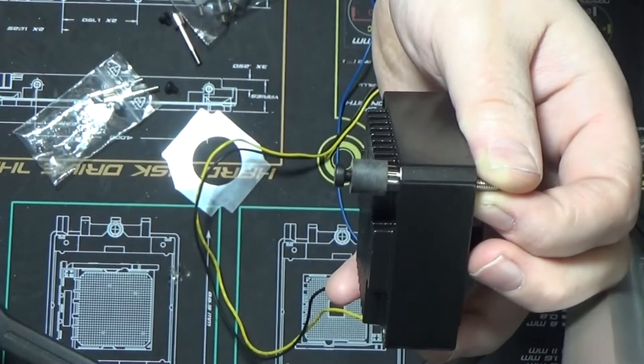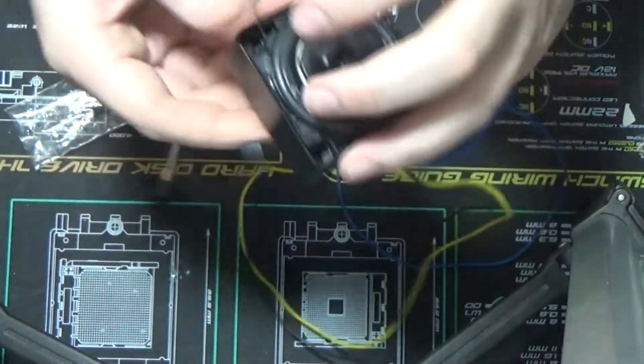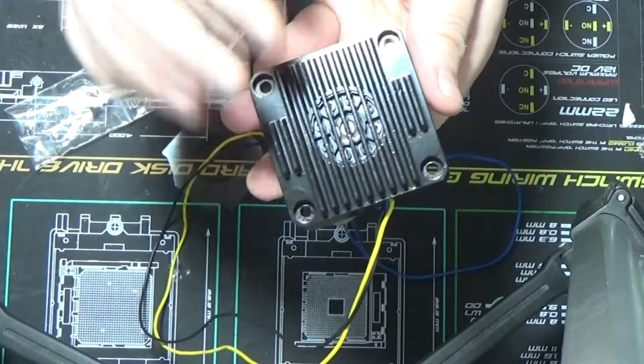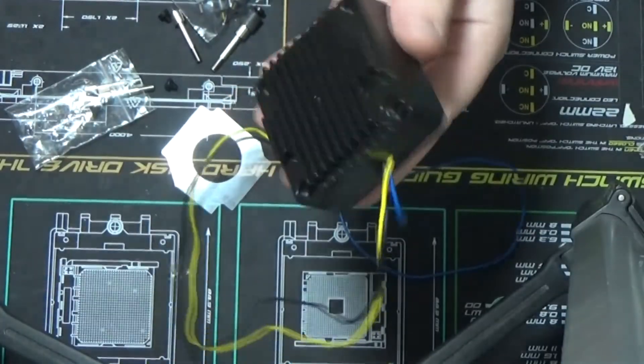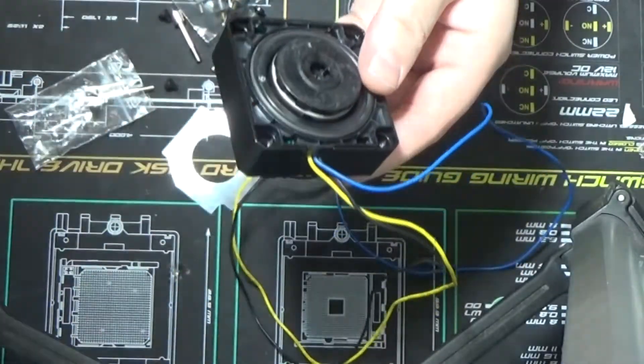All right, so pretty nice heat sink. I'm a big fan of these EK ones. We have them in silver and black here at Frozen CPU. Let's take a look at the Bits Power.